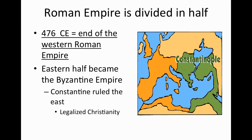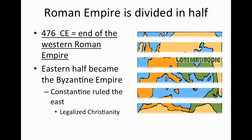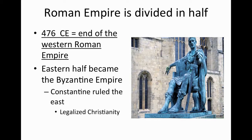In 476, the Western Roman Empire ends. These barbaric tribes take over and maintain a lot of the Roman traditions like Christianity, but for the most part you're going to have smaller little kingdoms. However, the Roman Empire is going to continue on in the east, turning into a new empire called the Byzantine Empire, ruled by a man named Constantine. He's important because he actually legalizes Christianity. We'll talk about the Byzantine Empire the next day.